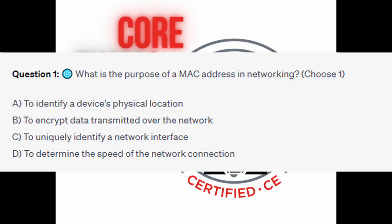Is it B, to encrypt data transmitted over the network? Is it C, to uniquely identify a network interface? Or is it D, to determine the speed of the network connection?